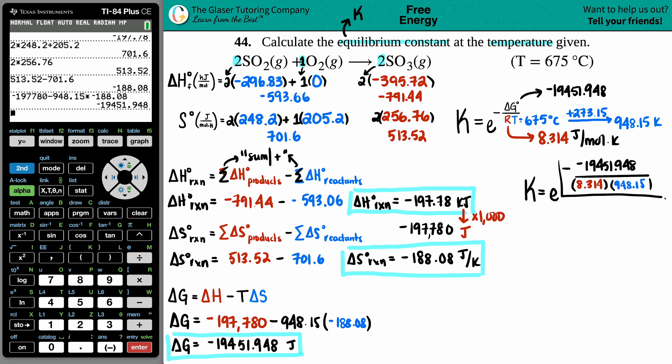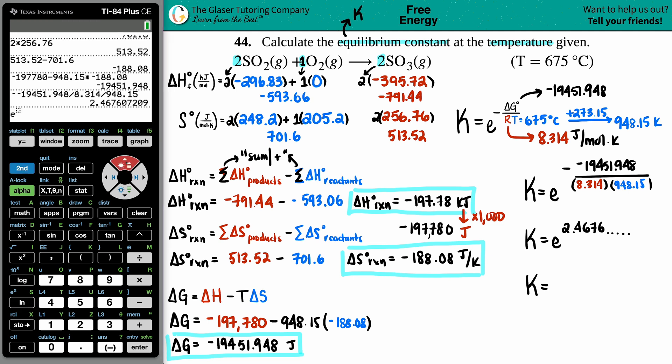I would simplify this first so you can take the e value and raise it to one number. K = e raised to... negative times negative is positive. I'll go to the calculator: negative times that number divided by 8.314, and since I want 948 in the denominator, I'll press divide again - 948.15. We get 2.4676 with more numbers. E, second, ln - that's where you'll find the e button. Grab the whole number and press enter.